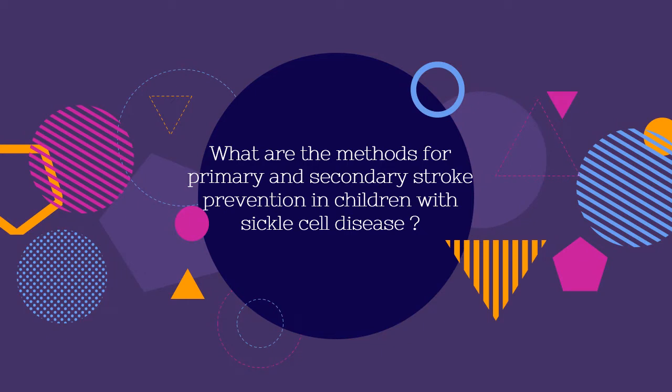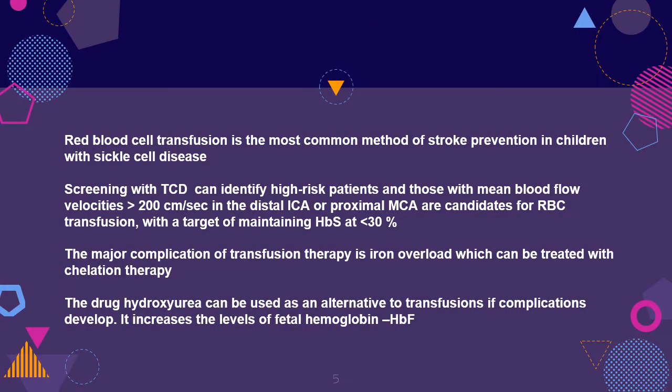What are the methods for primary and secondary stroke prevention in children with sickle cell disease? Red blood cell transfusion is the most common method. Screening with transcranial Doppler can identify high-risk patients; those with mean blood flow velocities more than 200 cm per second in the distal ICA or proximal MCA are candidates for RBC transfusion, with a target of maintaining hemoglobin S at less than 30%. The major complication of transfusion therapy is iron overload, which can be treated with chelation therapy.